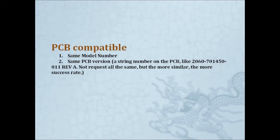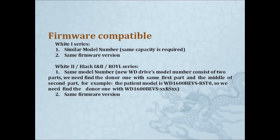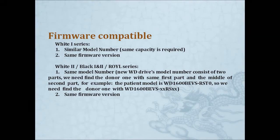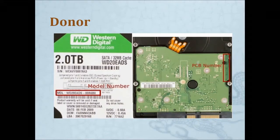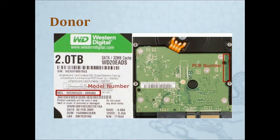To summarize: if you're finding donor firmware, you need the same model and same firmware version. To my experience, you should also find a drive with the same country code and similar production date. And of course, the same LBA — which is the same capacity — and the serial number should be close. This will increase the chance of success.